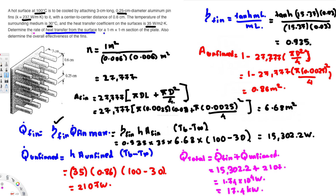That answers Part 1 — the rate of heat transfer from the 1×1 m section is 17.4 kW. Now for Part 2, we need to determine the overall effectiveness.